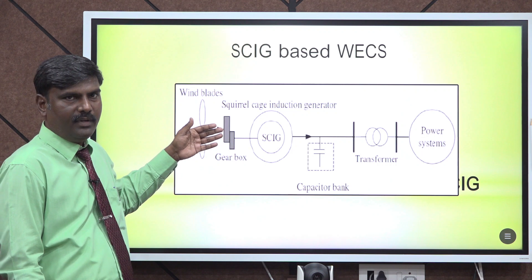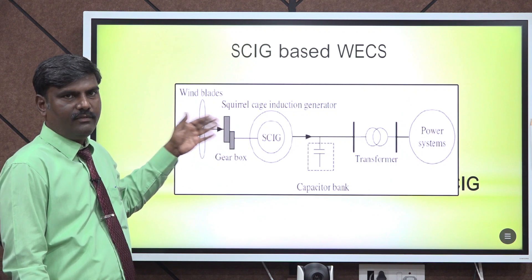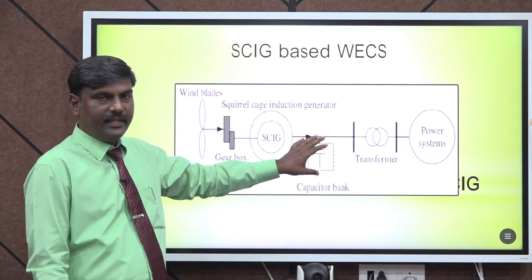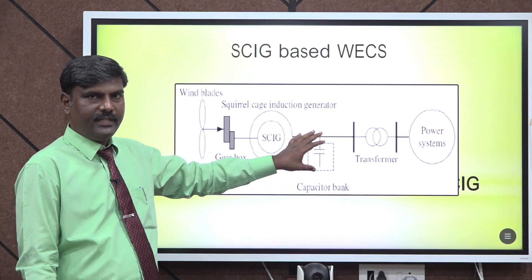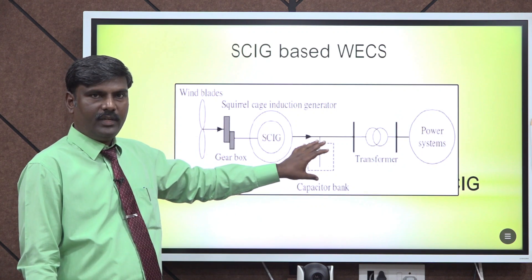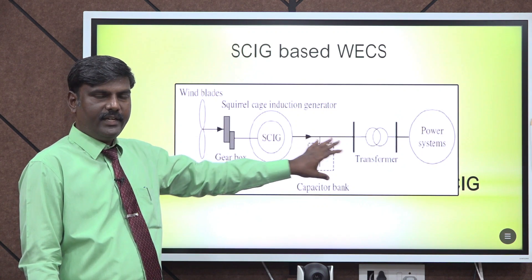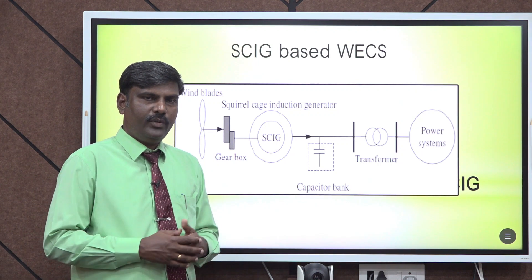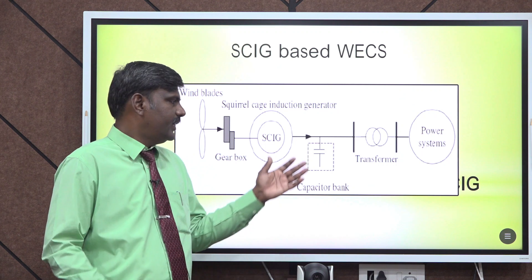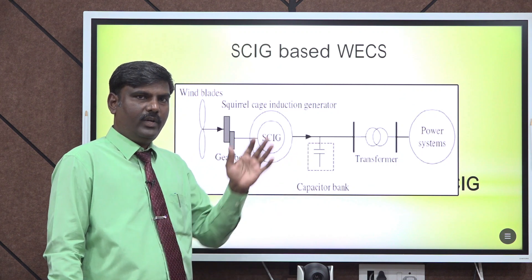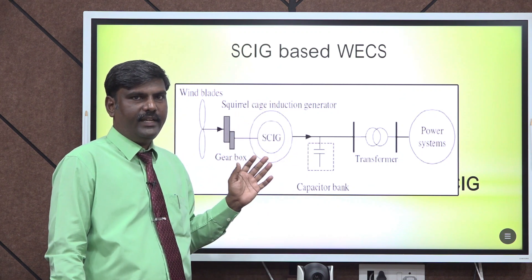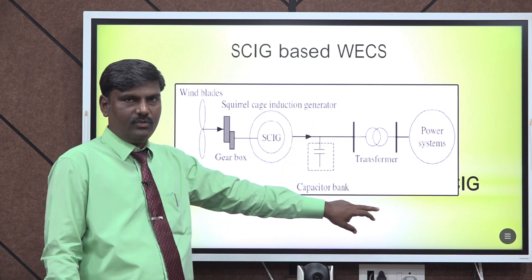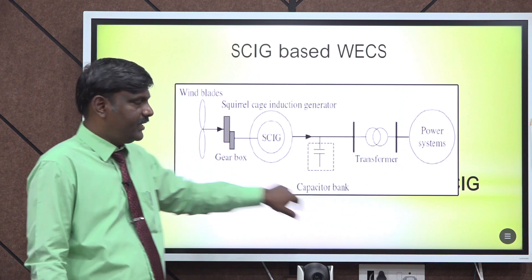Here we are providing that with the help of the gearbox from the turbine. The main drawback of this squirrel cage induction generator based wind energy conversion system is the requirement of a capacitor bank. Initially the plant can install a capacitor, but after that due to ageing and faults, if the capacitor fails the voltage becomes fluctuating, and surely it will affect the entire power system.